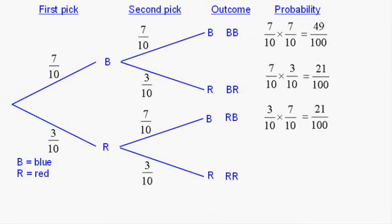And the fourth one is two reds, first red, second red, three tenths times three tenths, nine hundredths. And now, it's always a good idea to do a check here because all of these four probabilities add up to one because they're the only four possibilities in the situation. And they do add up to 100 over 100, which is one. So we've done our check.